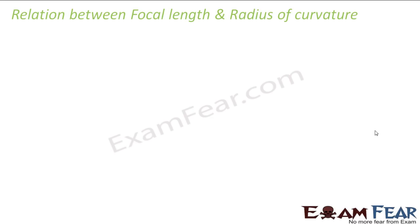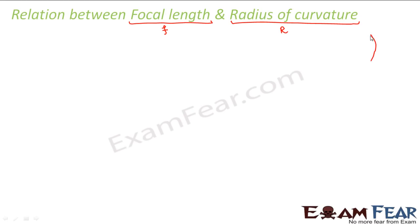Now we will look at the relationship between focal length and radius of curvature. Focal length is the distance from the principal focus to the pole — that is small f. Radius of curvature, capital R, is the radius of the sphere of which the mirror is a part. We want to find a relationship between this focal length and this radius of curvature.